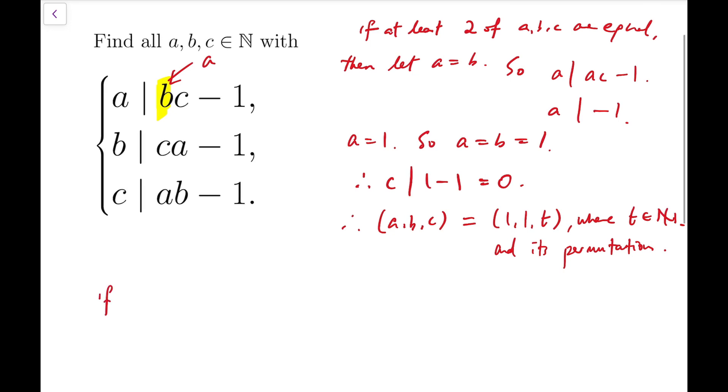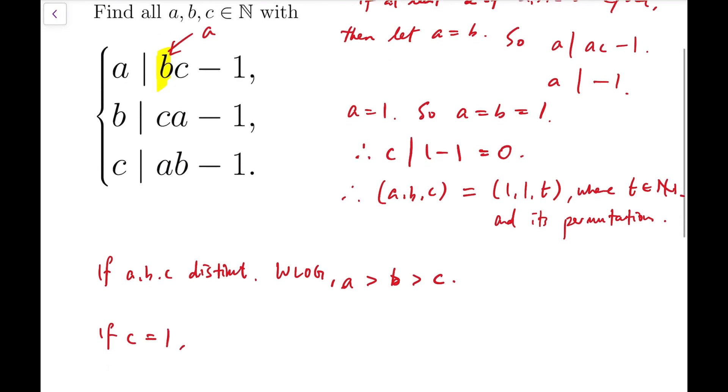So now we move on to the second case, which is that A, B, and C are distinct. And of course we can try to arrange the order, so I can say that without loss of generality, I have A the largest, and then B, and then C.